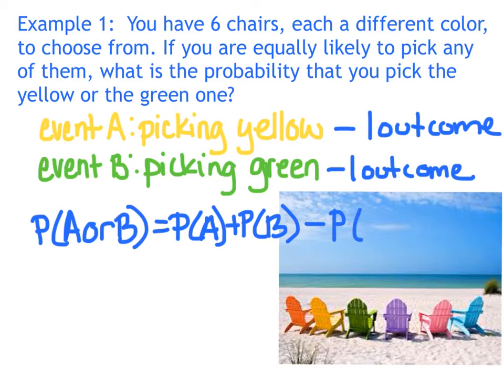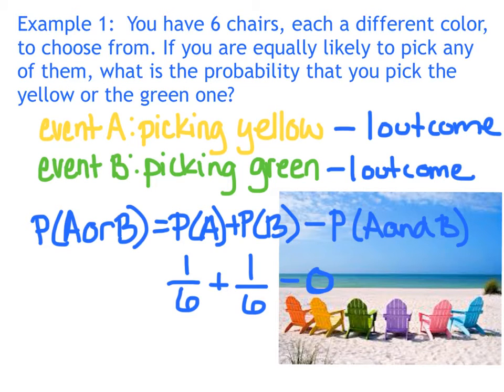So our probability of A or B is going to be the probability of A plus the probability of B. I'm going to draw my picture here, and then minus the probability of both. So the probability of A is one out of six chairs. The probability of B is also one out of six chairs. The probability of both is none. There are no yellow and green chairs, zero. So the probability of A or B is one-sixth plus one-sixth, which is two-sixths or one-third.